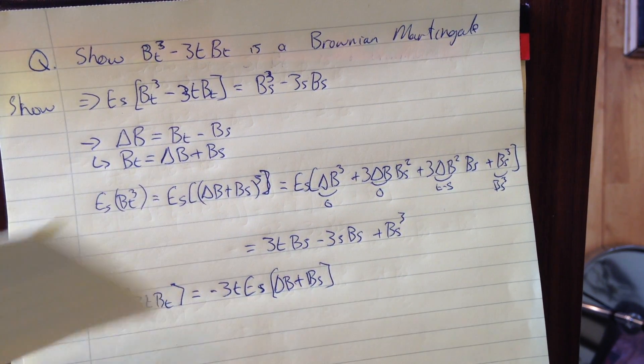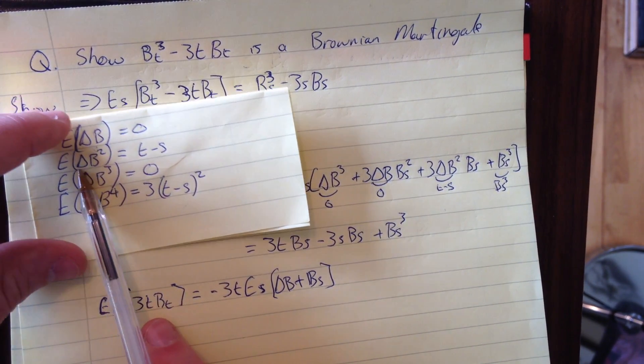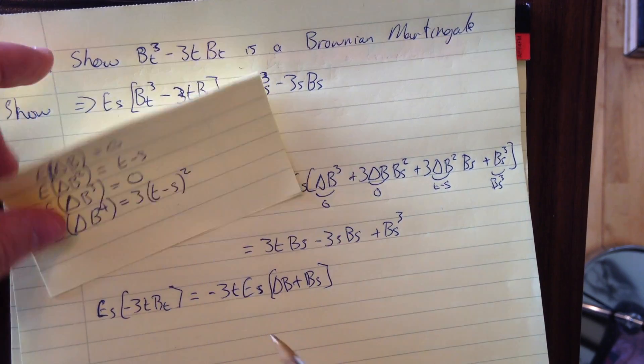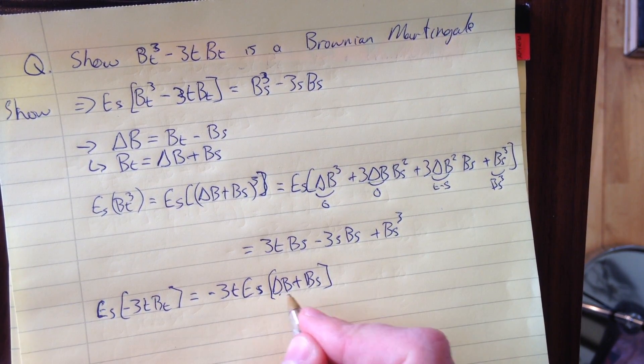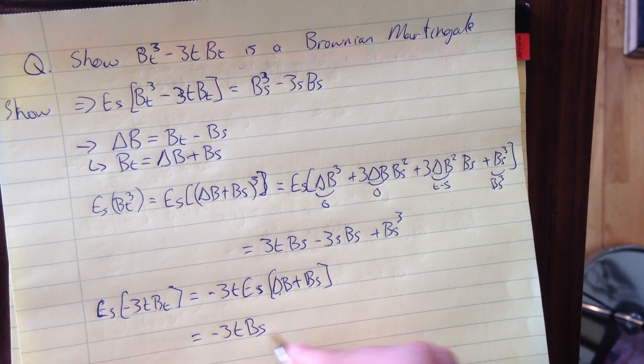Reviewing our cheat sheet, delta B equals 0, so this term goes to 0. We're left with -3tB_s for the second term.